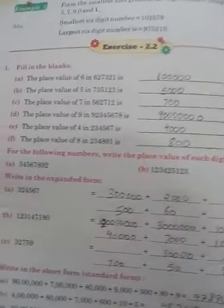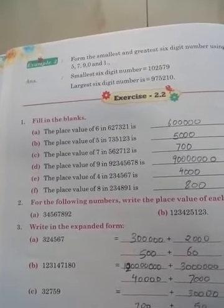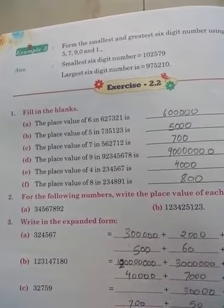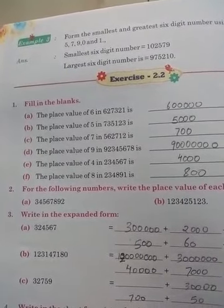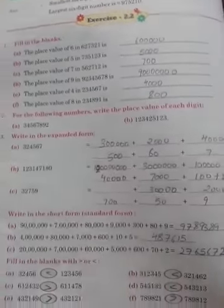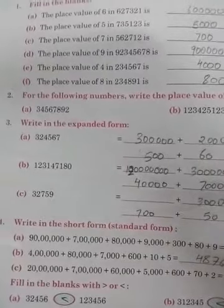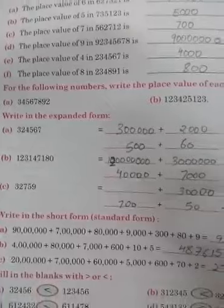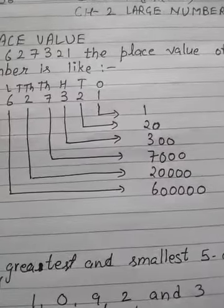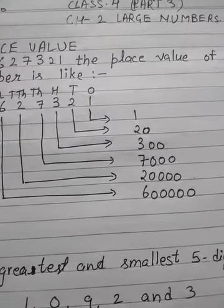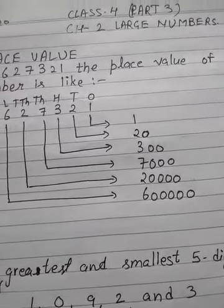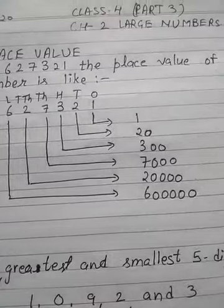What you have to do is complete the fill in the blanks. In part A, the place value of 6; in part B, the place value of 5; in part C, the place value of 7. You can write it according to the places. For the following numbers, write the place value of each digit — you can write it like that, or draw a place value chart and simply put the digit below the respective place.